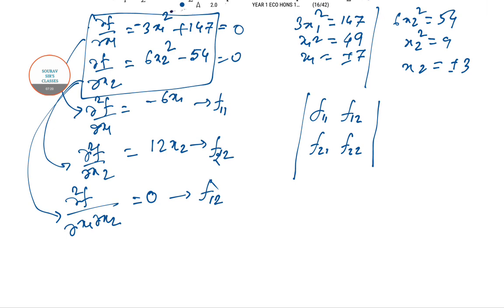Now here we have a very interesting rule. In order to have these kind of questions, meaning a two variable system: first, if we take this formation, that is f11, if this thing is less than 0, and f11 into f22 minus f12 squared, that is this determinant value is positive, then the whole thing is max.